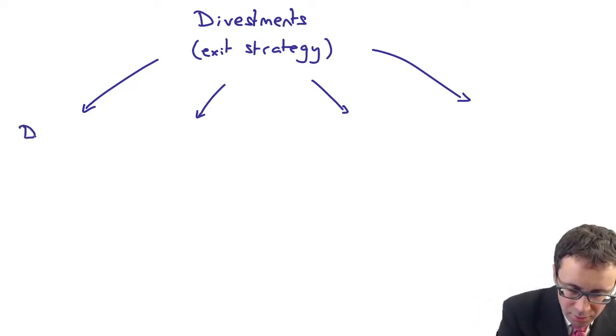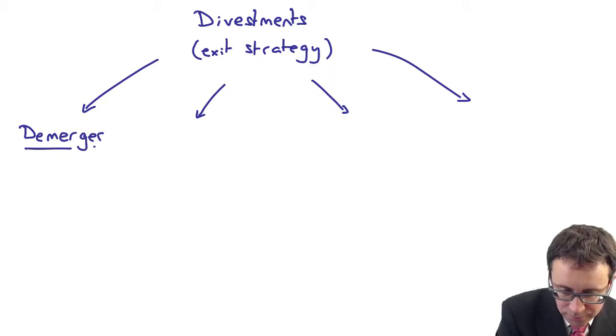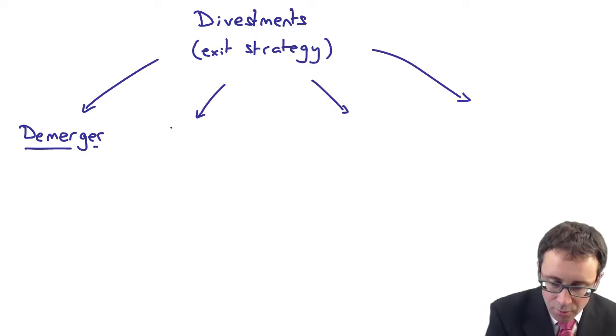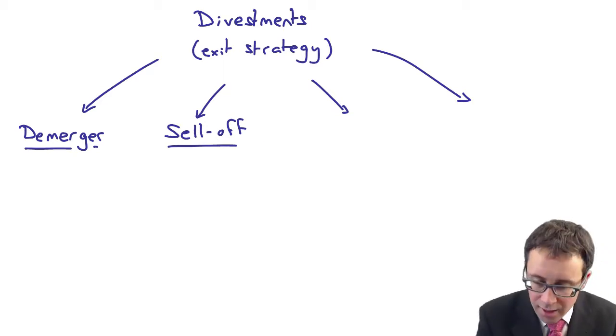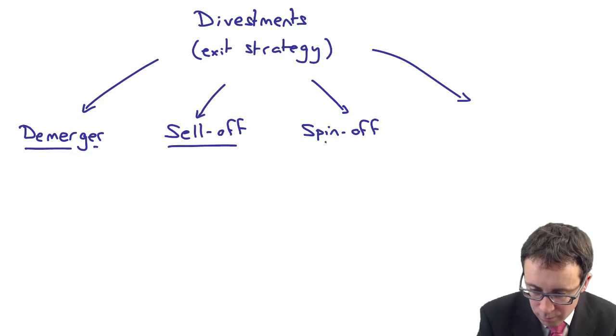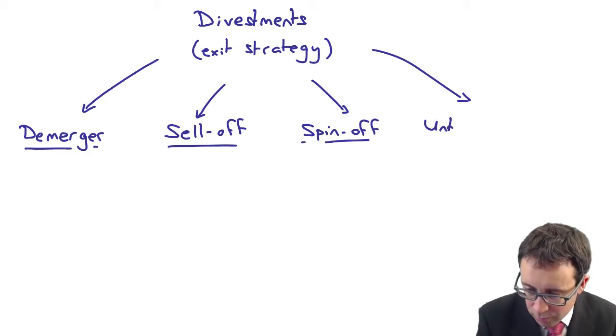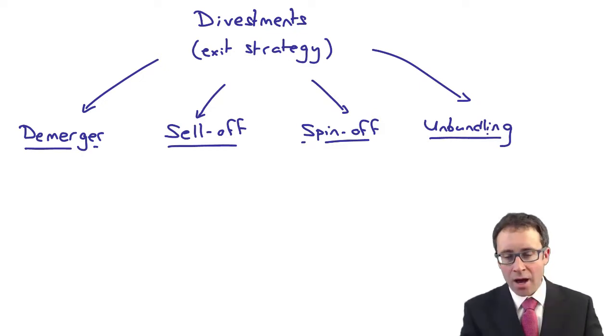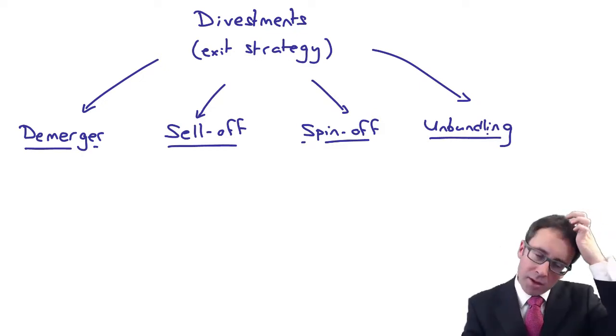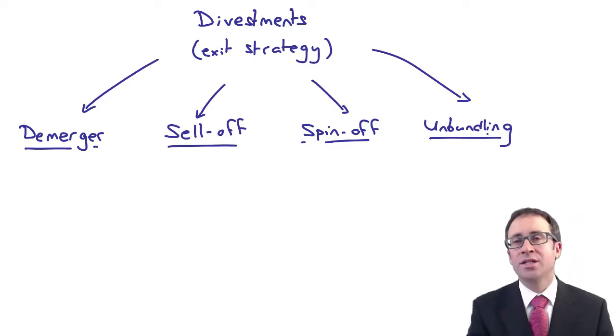The first one is a demerger. The second is a sell-off. Then you have a spin-off and an unbundling. You just need to know what each type of divestment strategy involves.